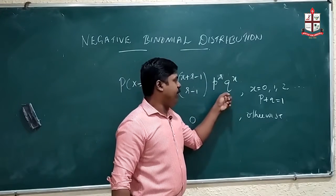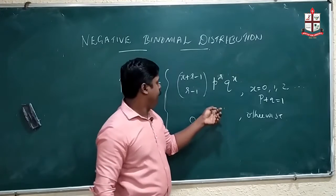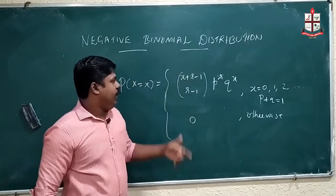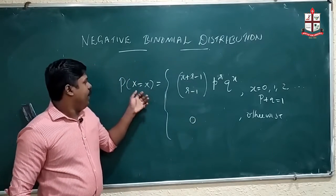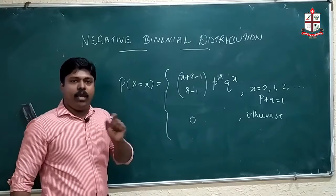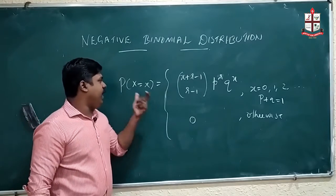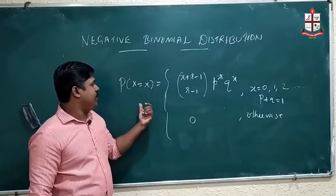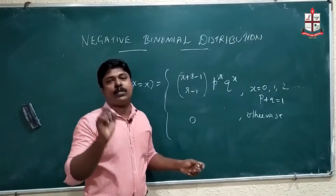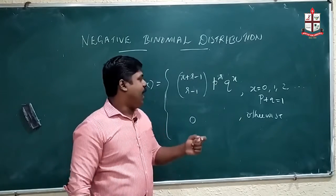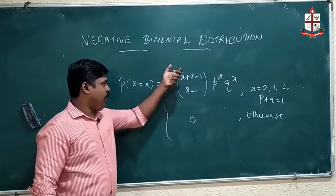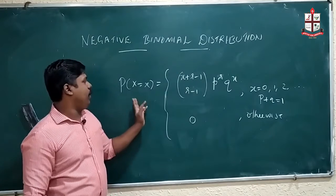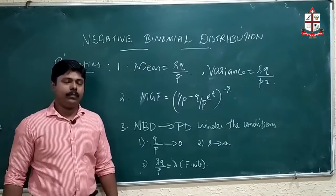Here q is the probability of failure and x + r is the number of trials. This probability mass function gives the probability of getting x failures before r successes in x + r trials — that is, r successes and x failures in x + r trials.